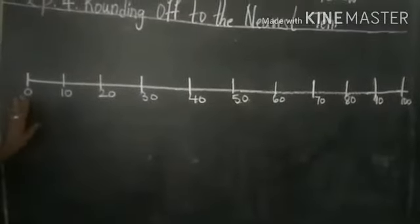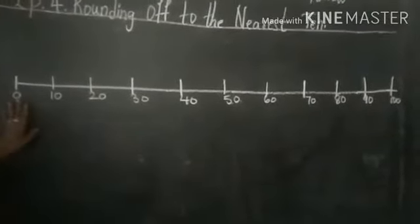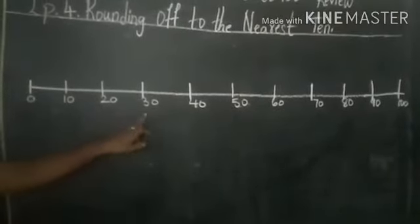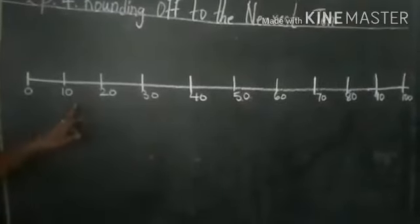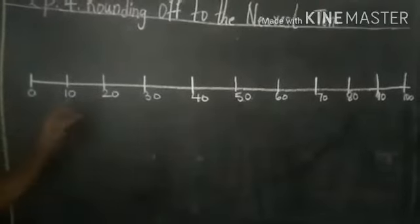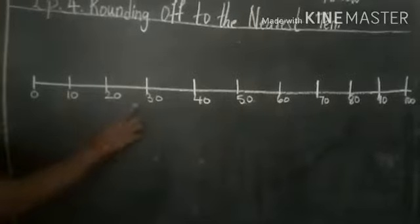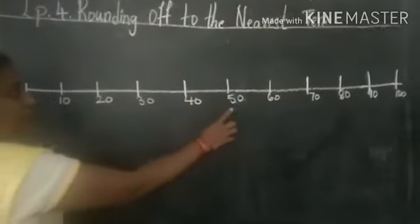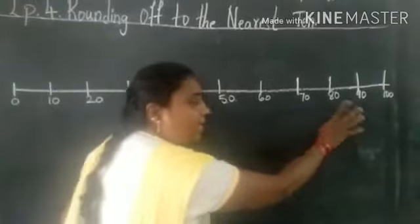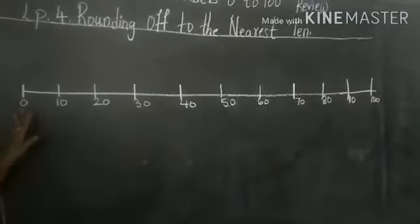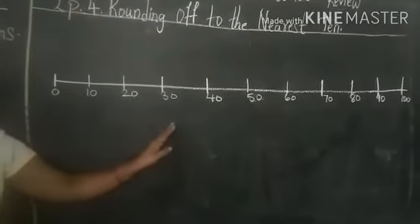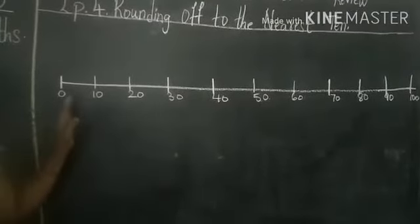Now children, this is the number line which is marked with multiples of 10. That is 10, 20, 30, 40, 50, 60, 70, 80, 90, 100. Now we are going to mark some numbers on this line children.